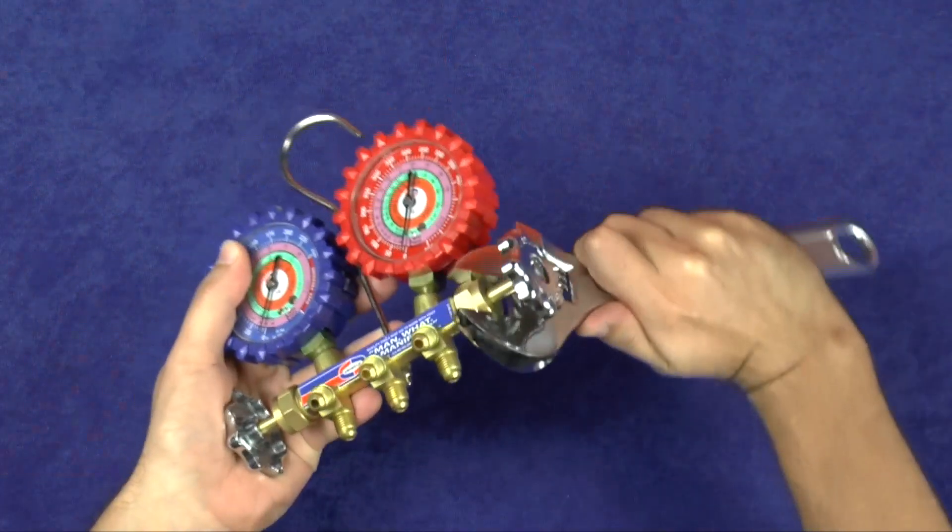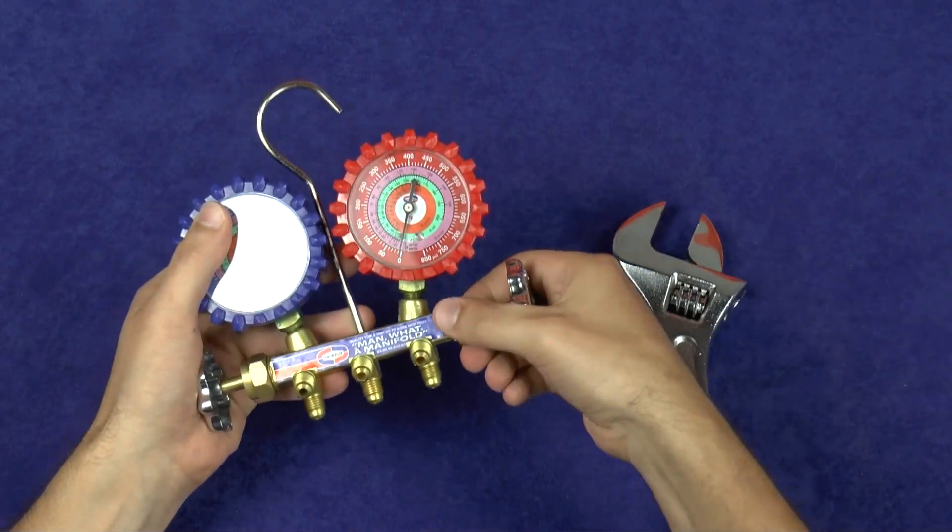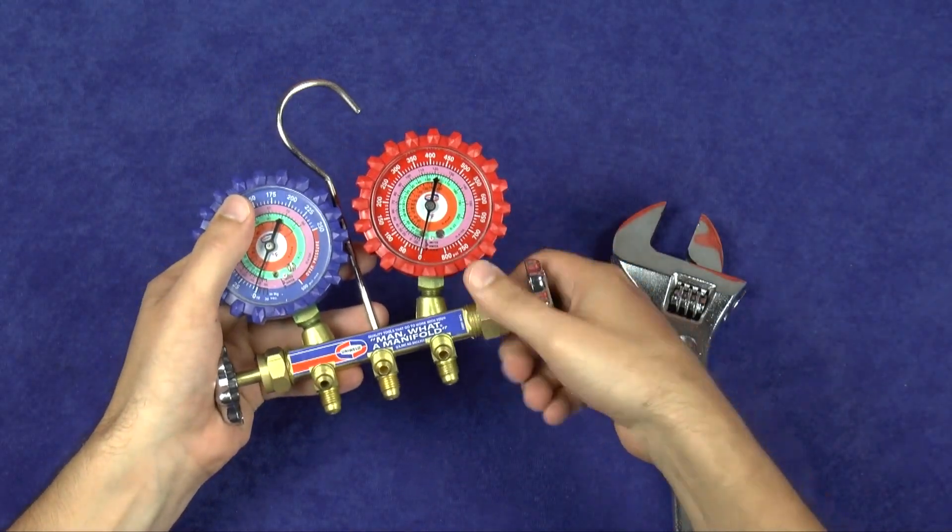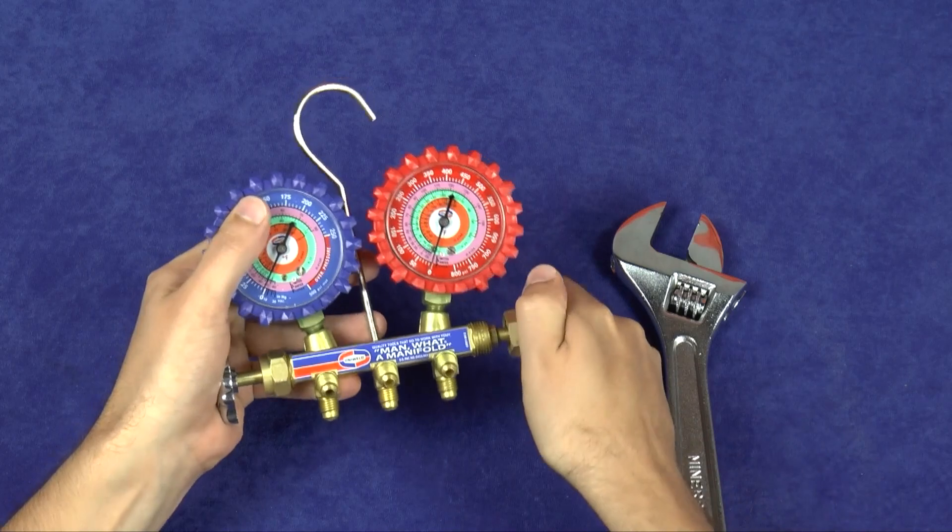But first, check to see if any foreign debris has found its way inside the manifold. Unscrew the brass packing nut and remove the valve stem assembly from the manifold body by turning the metal hand wheel counterclockwise.